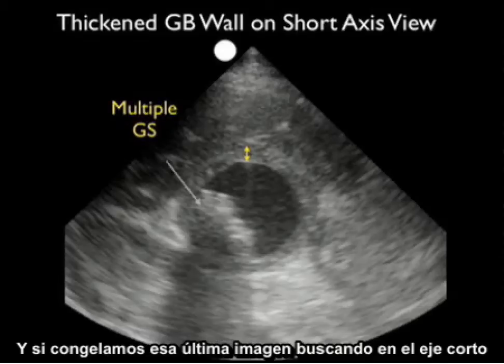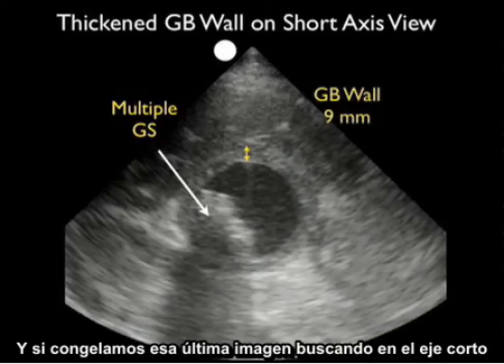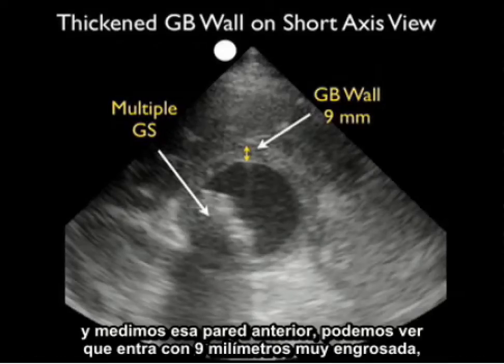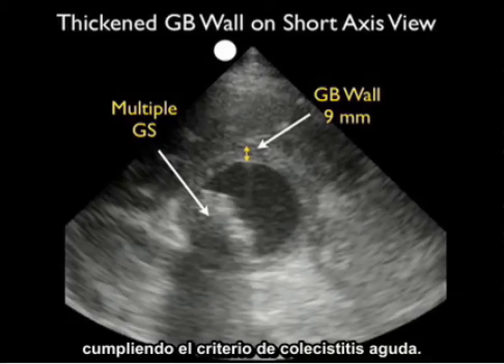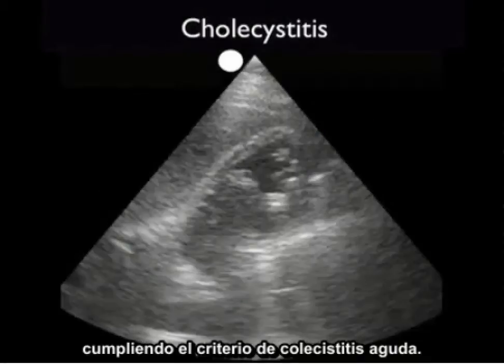And if we still that last image down looking in short axis and measure that anterior wall, we can see that it comes in at 9 millimeters — very thickened — fulfilling the criteria of acute cholecystitis.